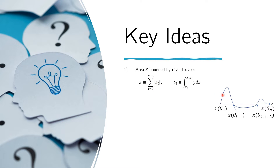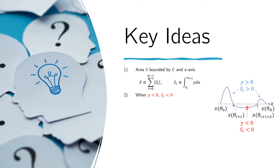We put absolute value symbols here because we want the positive area. We need the absolute value because if the curve falls below the x-axis, then the area there is negative. So if you just compute the integral of this region from x of theta i to x of theta i plus 1, you'll get a negative value — and we do not want to add that. We want the positive areas to add up, so we take the absolute value. It's important that we know where y becomes negative, because if the y's are all positive, we don't have a problem. But if there are regions where y is negative, we need to find those.